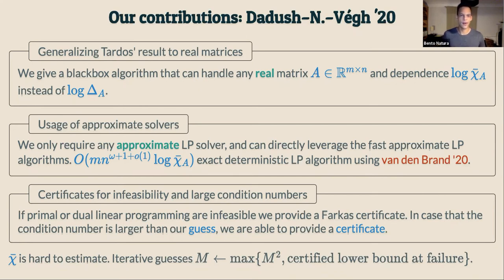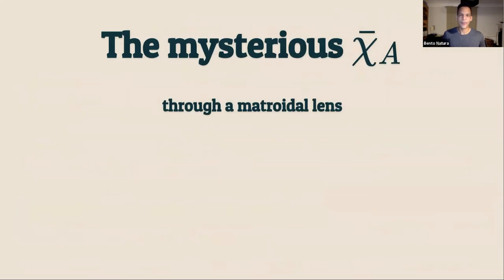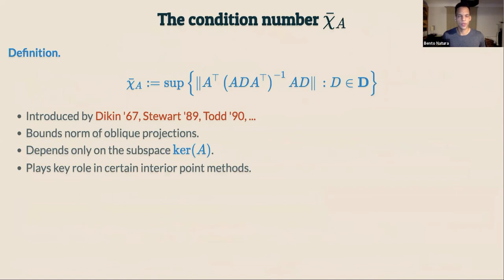What is chi-bar exactly? By definition, chi-bar is a supremum over matrix norms, essentially giving a bound on the norm of oblique projections. The set of matrices over which we take the supremum maps to the image of A-transpose, which is the orthogonal complement of the kernel of A, so it depends on the kernel of A. This is important for bounding the norms of predictor steps in the path-following method.